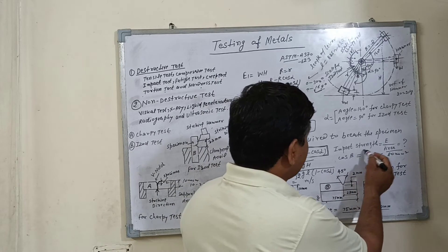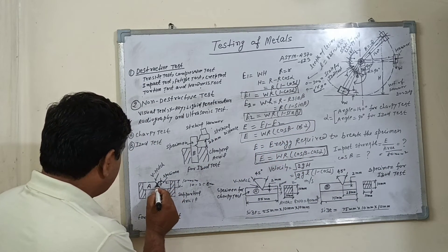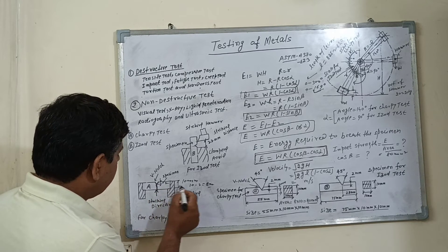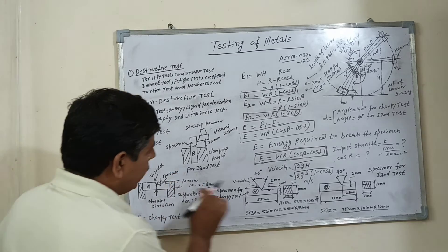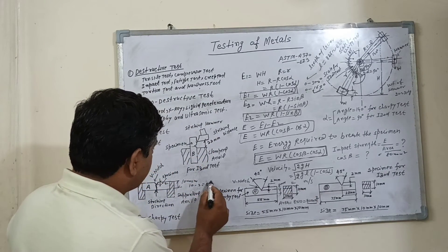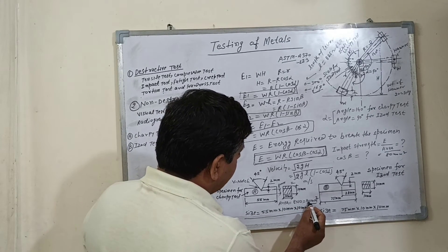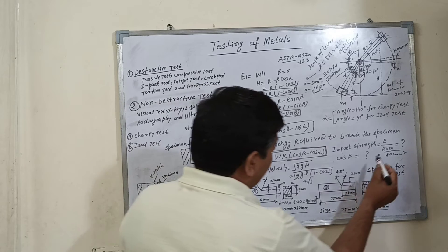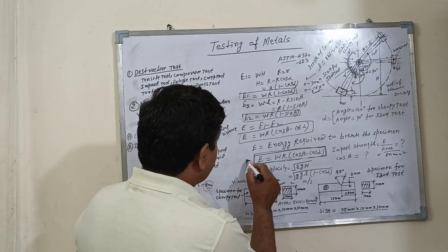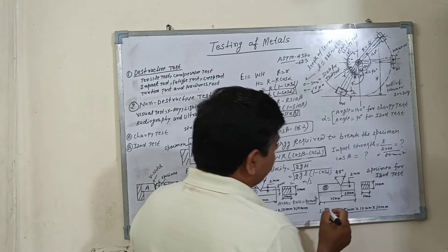The impact strength is equal to E divided by area. The area is calculated at the notch where the metal breaks. The depth of the notch is 2 mm and the cross-section dimension is 10 mm, so 10 minus 2 equals 8 mm. The area is 8 × 10 = 80 mm². Put the value of 80 here, and with E calculated from the formula, you can calculate the impact strength.